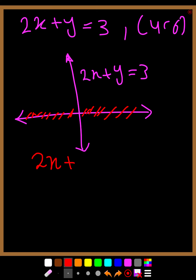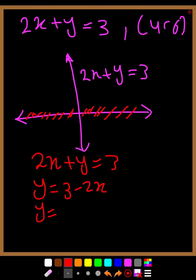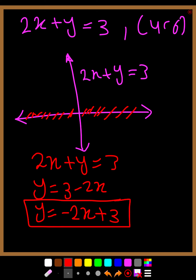Shifting 2x to the other side gives y equals 3 minus 2x, which we can rearrange as y equals minus 2x plus 3. Now ask yourself: where is the gradient here? The gradient is the coefficient of x, and don't forget to take the sign with it. So m1 equals minus 2.